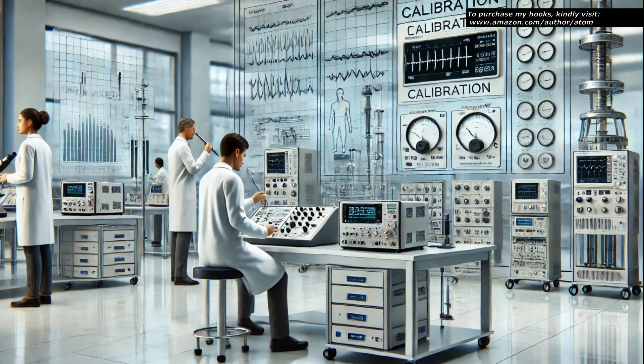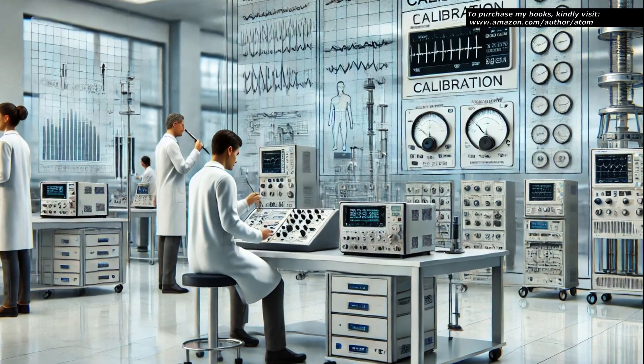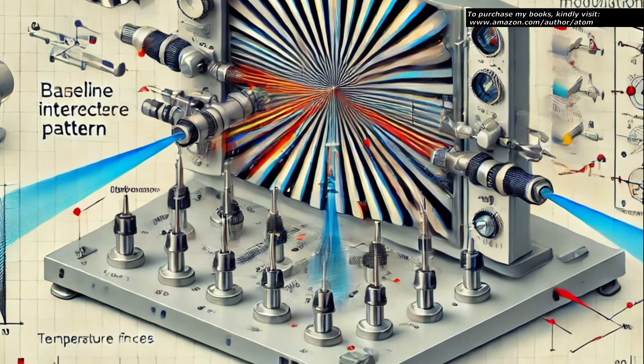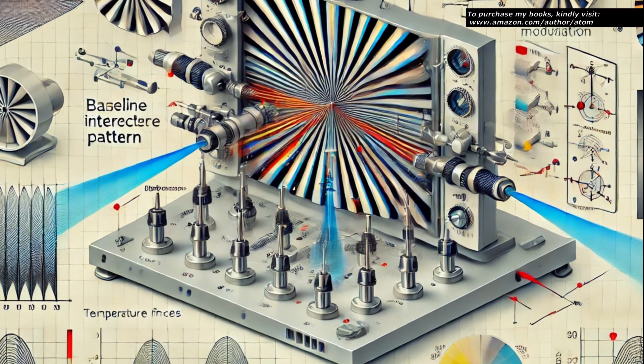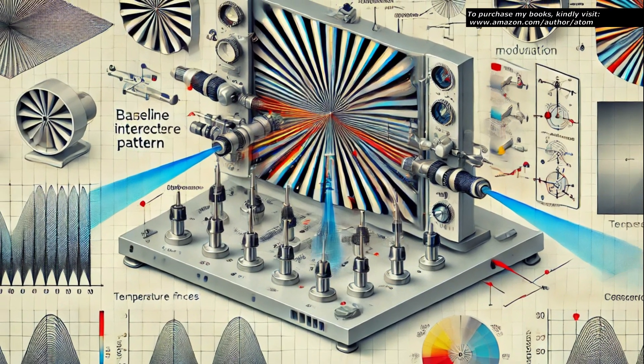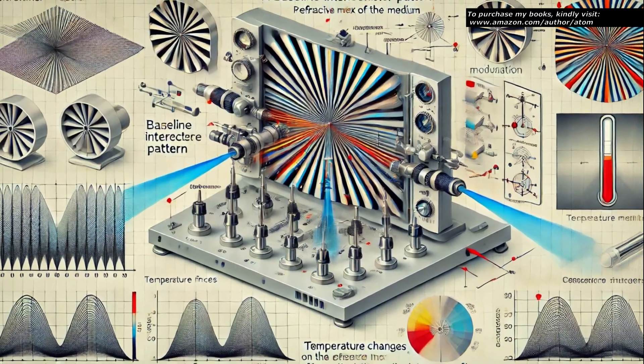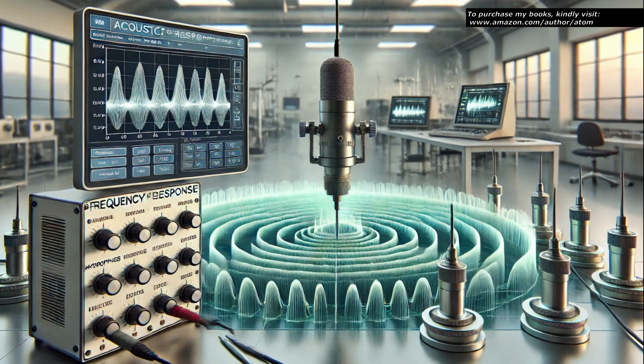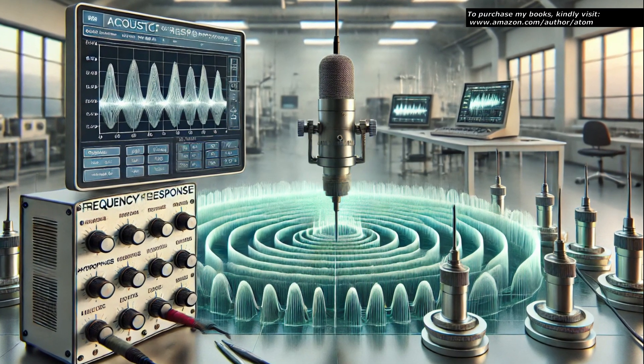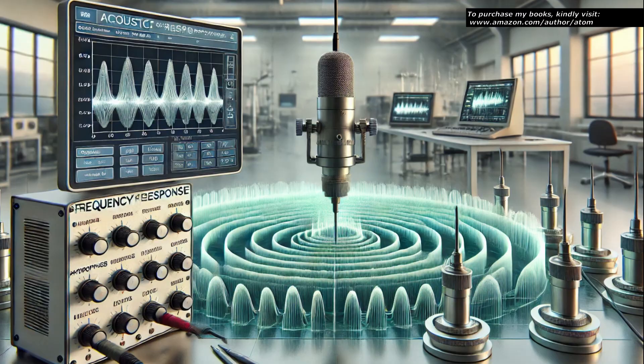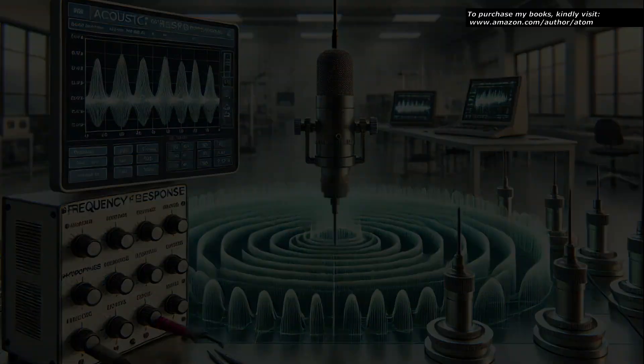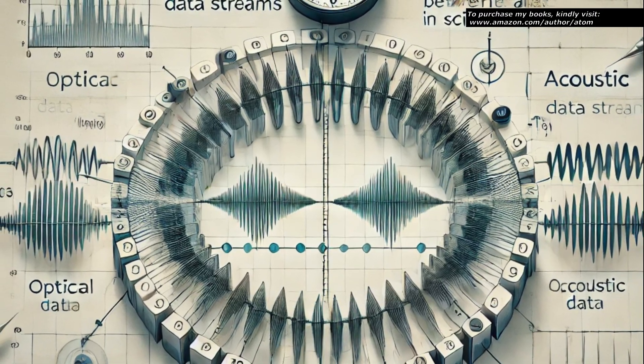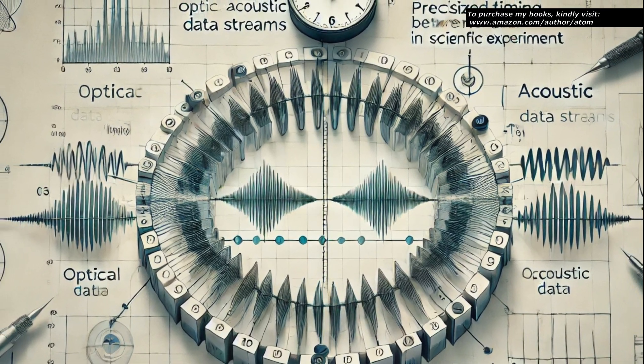Prior to data collection, calibration procedures are carried out. The interferometer is calibrated by establishing a baseline interference pattern without the CF-252 source and introducing known refractive index changes using temperature modulation. The acoustic system is calibrated using a standard acoustic source to generate known pressure waves, verifying the sensitivity and frequency response of the hydrophones. Synchronization between the optical and acoustic systems is confirmed to ensure that data from both can be accurately correlated.